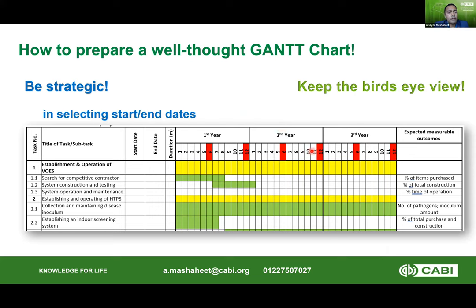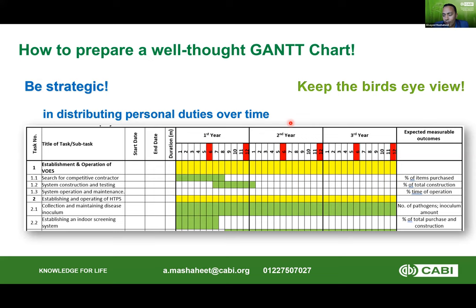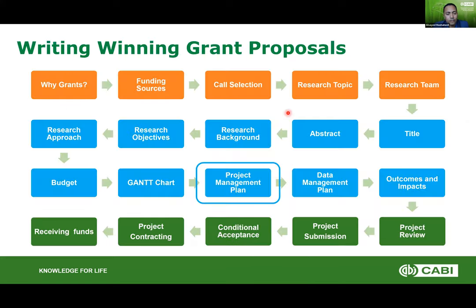When selecting starting dates, be careful not to start a process before its prerequisite ends. When distributing duties on the research team, make sure you don't overload them at one particular time and leave them with nothing to do for the rest of the project. If you have graduate students, don't overload them during exam periods. These details show that you actually gave your proposal enough thinking and consideration. Be strategic when planning the Gantt chart.